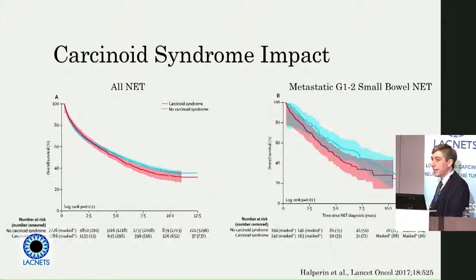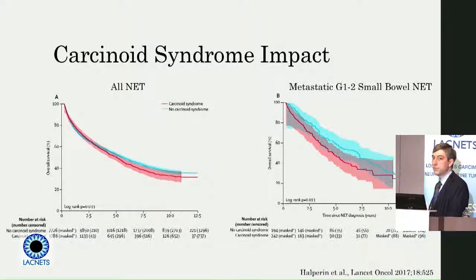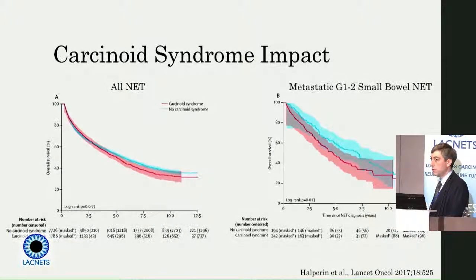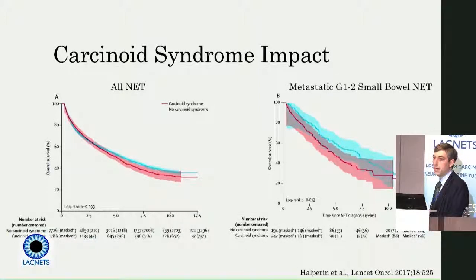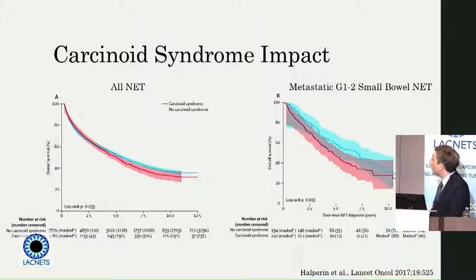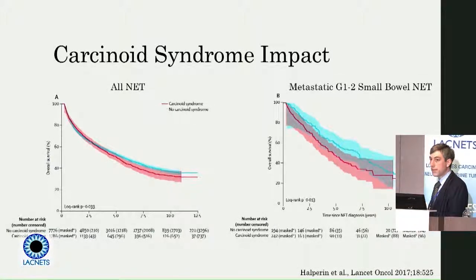It turns out if you look at the overall population of folks who fit these criteria in the United States, patients with carcinoid syndrome live a little bit less long than patients without carcinoid syndrome. It is impossible from these data to say whether this is purely an unmeasured covariate — meaning this is just a proxy for having more cancer in your body and therefore more advanced disease. But when we see carcinoid syndrome, we need to have our antennae up that things can be a little bit more complicated and difficult.